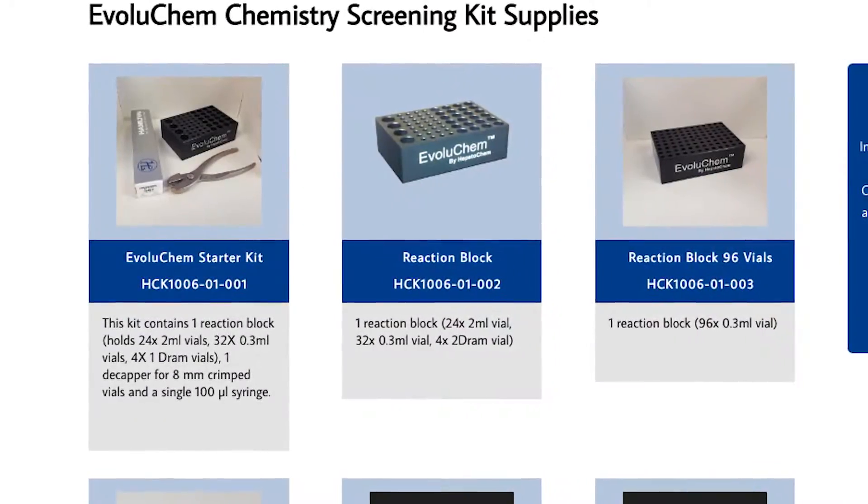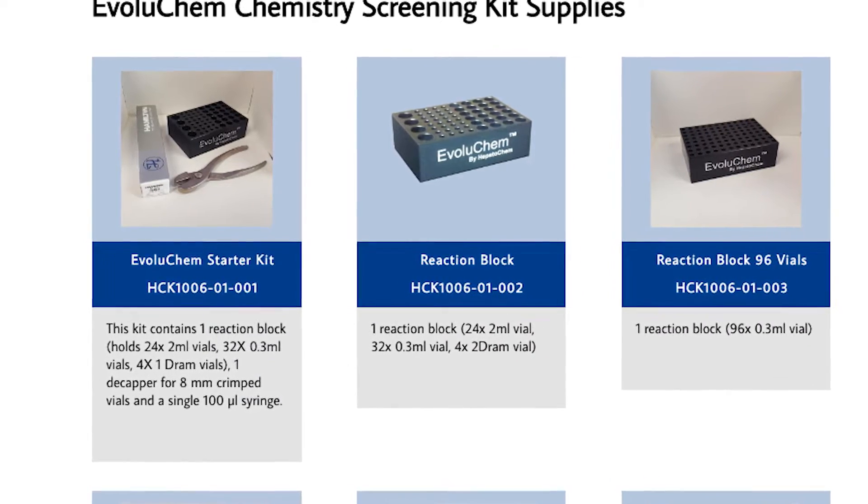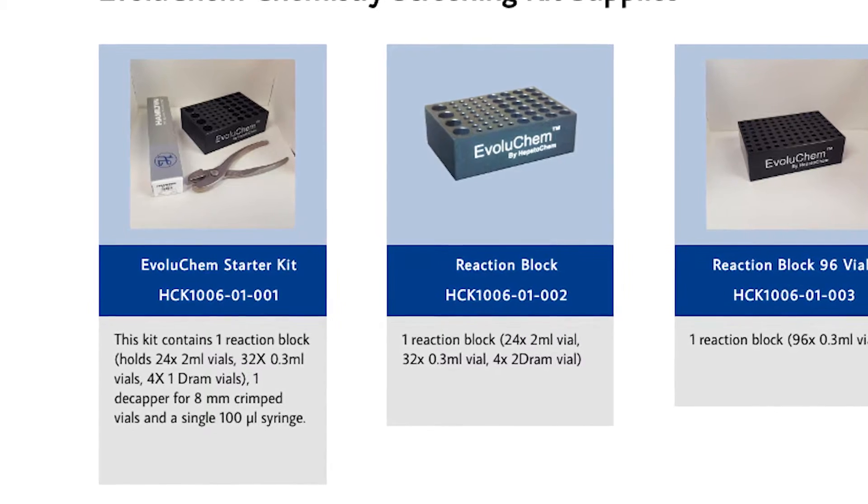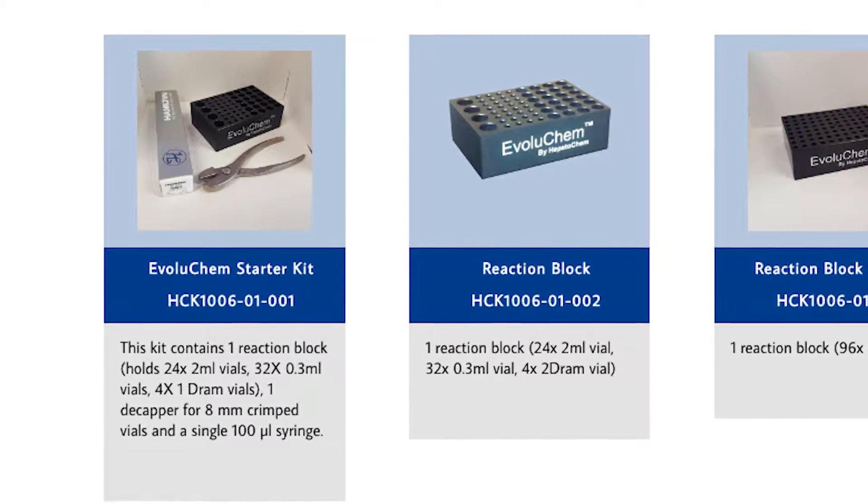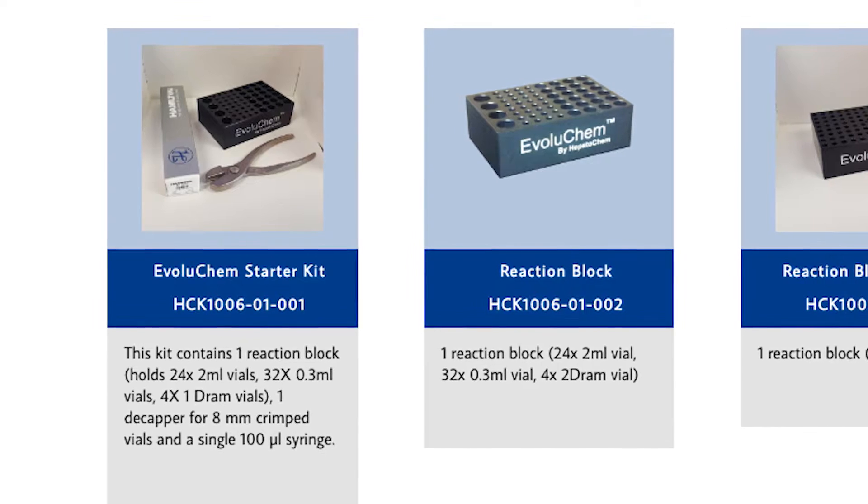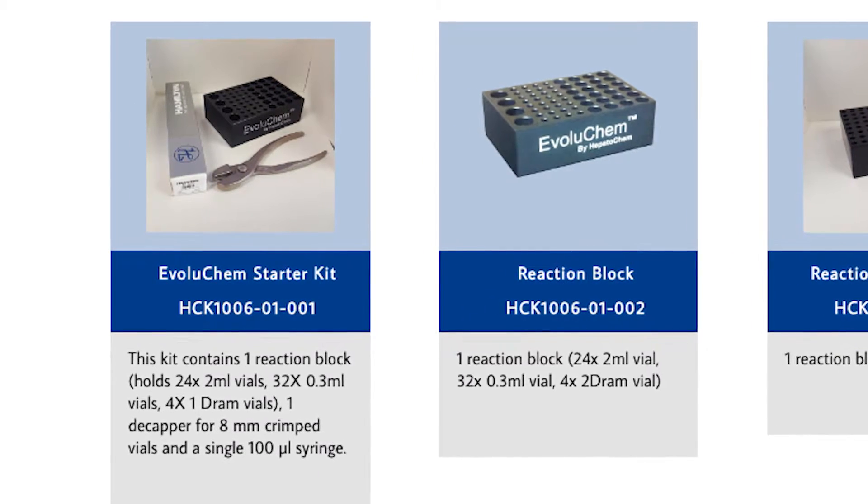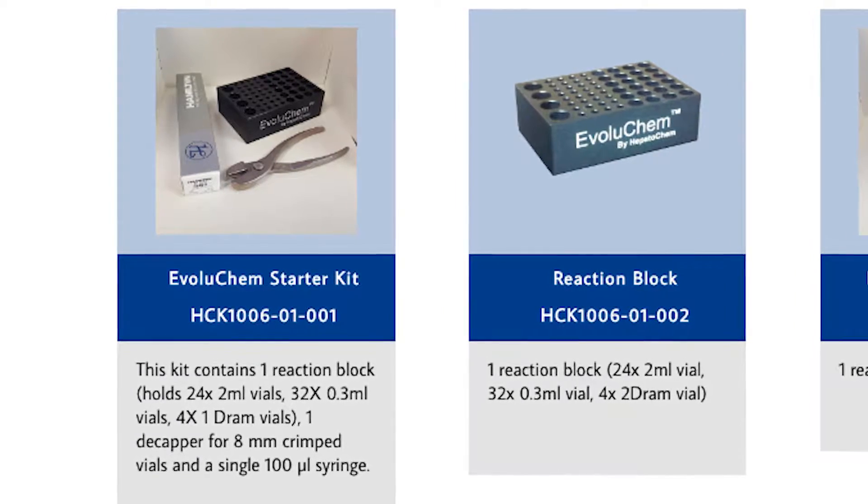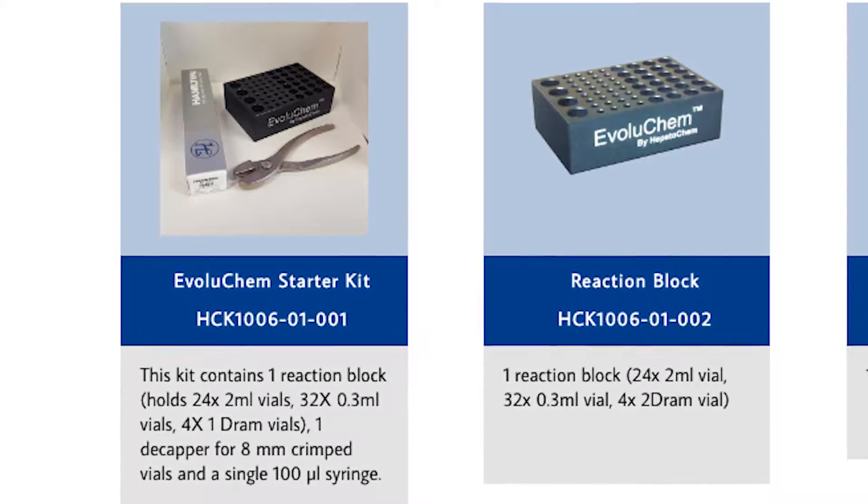Throughout this video we'll be taking advantage of an EvaluChem starter kit which includes a reaction block able to hold 24 2-milliliter vials, 32 0.3-milliliter vials, and four 1-gram vials. The kit also includes one decapper for the crimped catalyst vials and a single 100-microliter syringe.